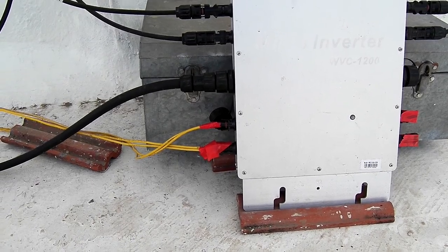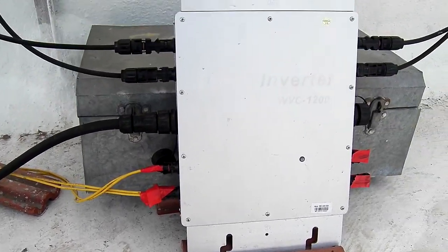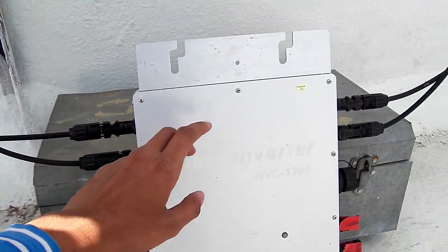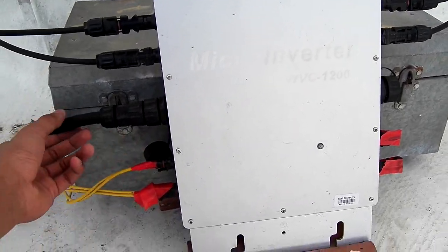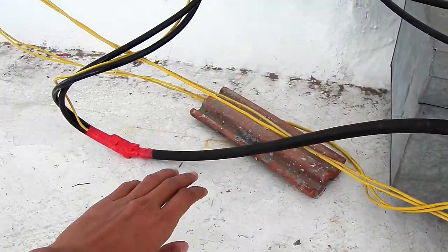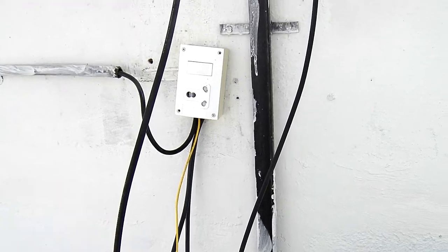As you can see, it is a very easy system to install - not a big deal. You just have to connect the solar panel. Here is the AC wire that you can directly connect to your grid. Let me show you the manual.